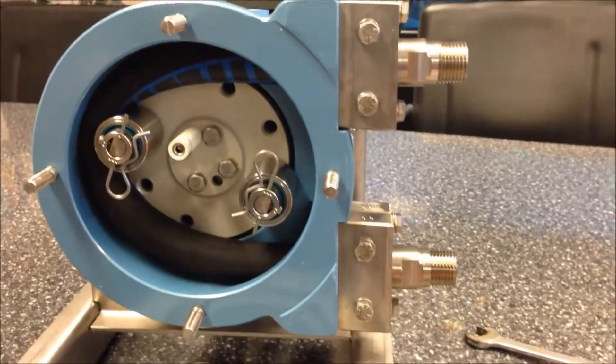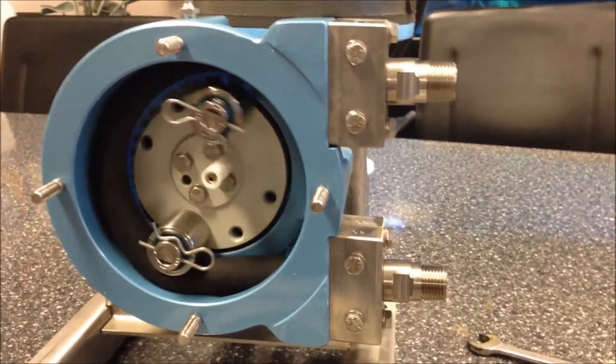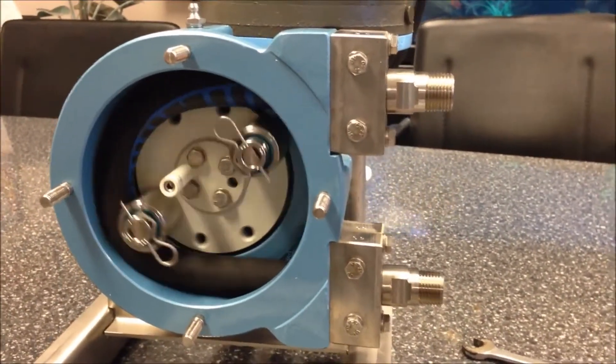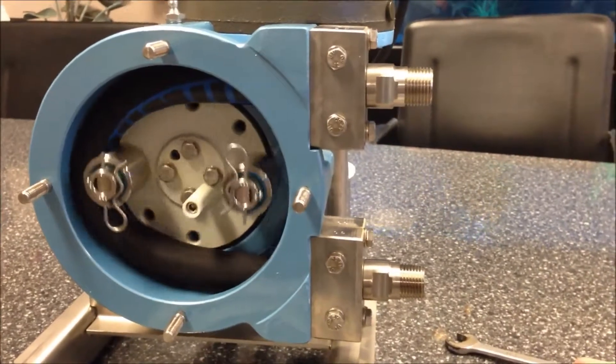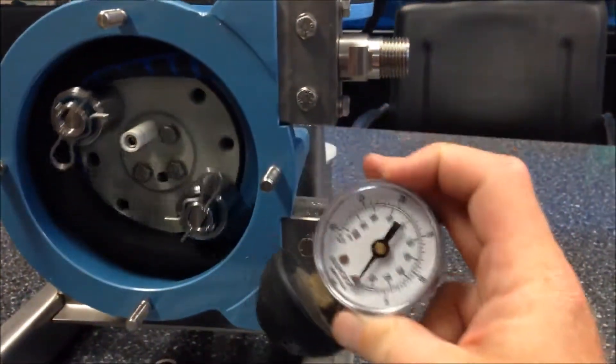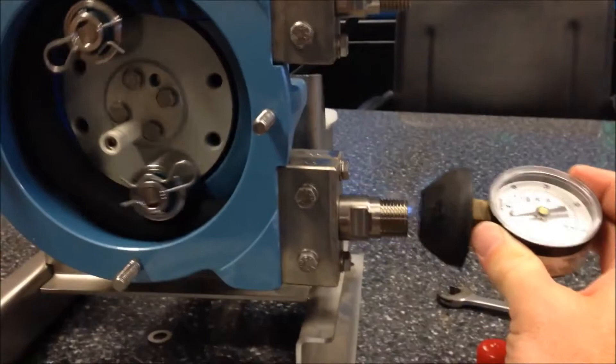Go ahead and start the pump if you will. This pump is operating in a clockwise orientation which puts the vacuum port at the bottom. We're going to go ahead and take our vacuum gauge and connect it to the vacuum port.